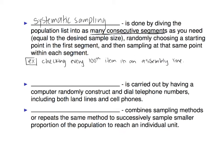Random digit dialing is where a computer randomly constructs and dials telephone numbers — that's how you get those political calls. Multi-stage sampling combines sampling methods or repeats the same method to successively sample smaller and smaller proportions of the population.